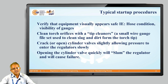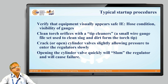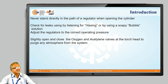The typical startup procedure in gas welding is very crucial from a safety point of view, requiring a standard safety checkup before commencing welding. First, verify equipment and hose condition, then clean torch orifices with tip cleaners. Check cylinder pressure and inspect regulators to ensure they are in good condition. Then use all required safety equipment including shield, goggles, and helmet before starting the process.